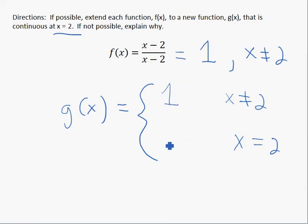Which means my function has to equal that. I'm just using my conditions for continuity. That is an ugly, ugly 1. I'm just using my conditions for continuity here. It has to equal 1.